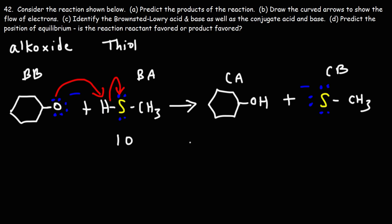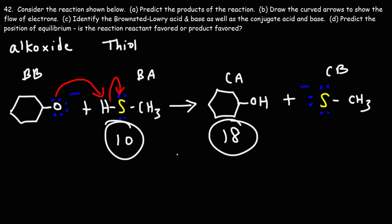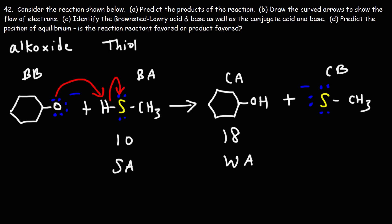The pKa of cyclohexanol is 18. We've now completed parts a, b, and c — predicted the products, drew the curved arrows, and identified the Brønsted-Lowry acid and base as well as the conjugate acid and base. Now we need to predict the position of equilibrium. Comparing the pKa of the Brønsted-Lowry acid (thiol, pKa 10) with the conjugate acid (cyclohexanol, pKa 18): the lower pKa is the stronger acid; the higher pKa is the weaker acid. The reaction shifts toward the weaker acid, so it is product favored.